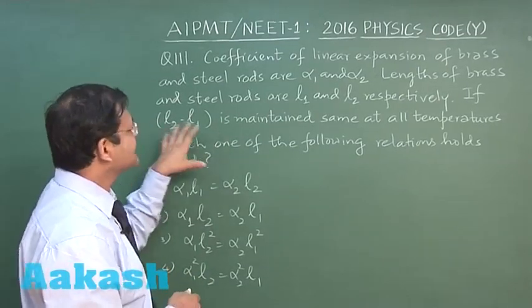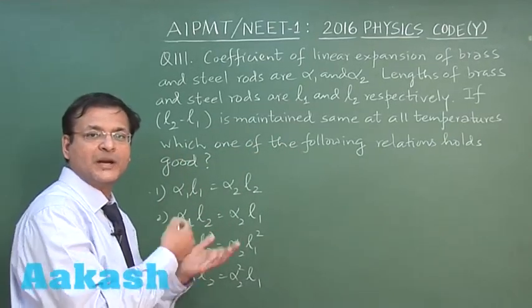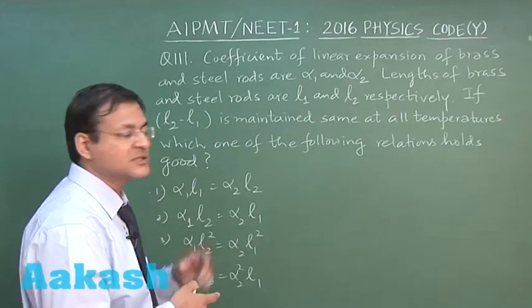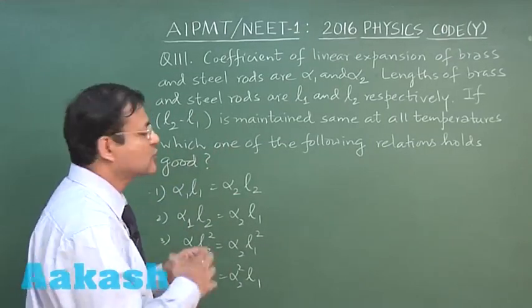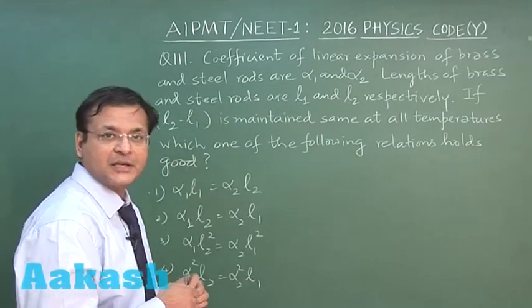If difference of this length is maintained same at all temperatures that simply means whatever is change in one rod same is the change in length of the other rod. This is what is the crux of the question. It should be equal. Then only the options will be coming to you.